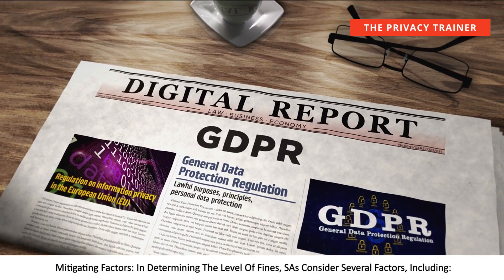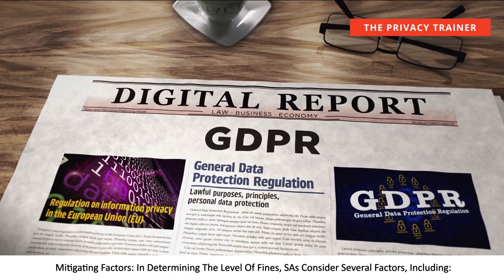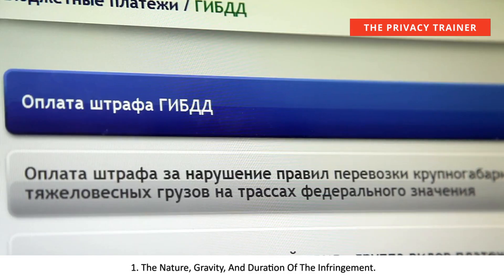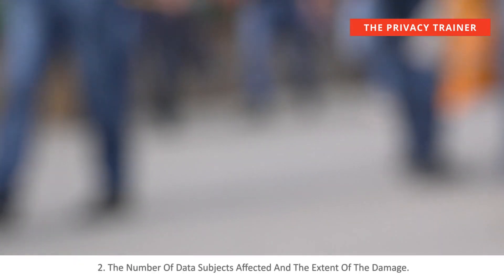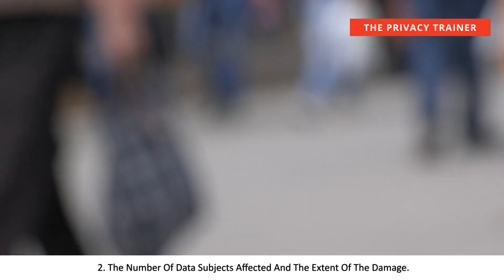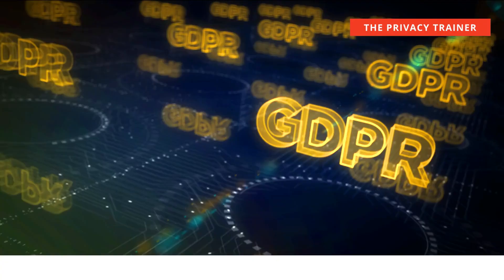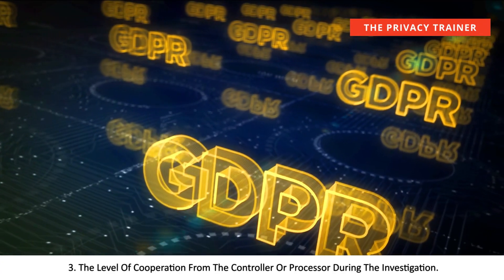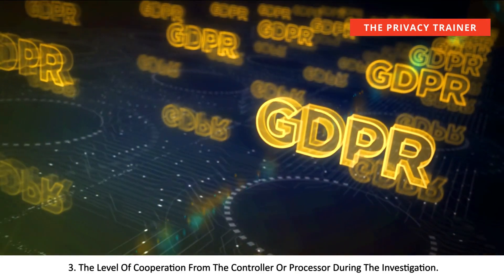Mitigating Factors. In determining the level of fines, SAs consider several factors, including: 1. The nature, gravity, and duration of the infringement. 2. The number of data subjects affected and the extent of the damage. 3. The level of cooperation from the controller or processor during the investigation.